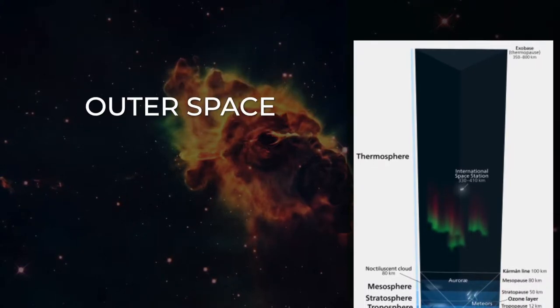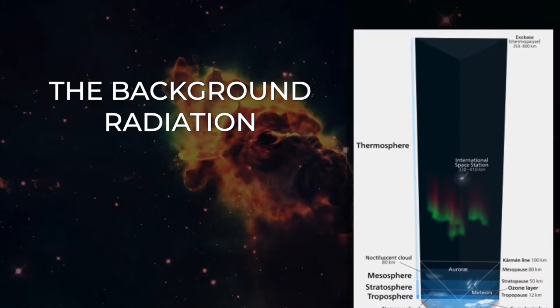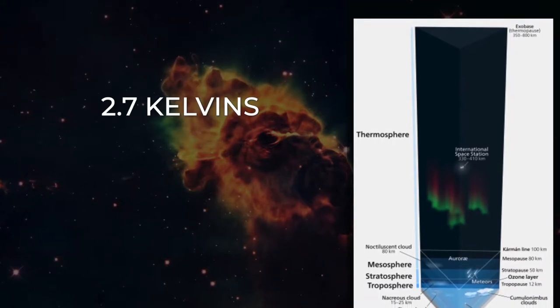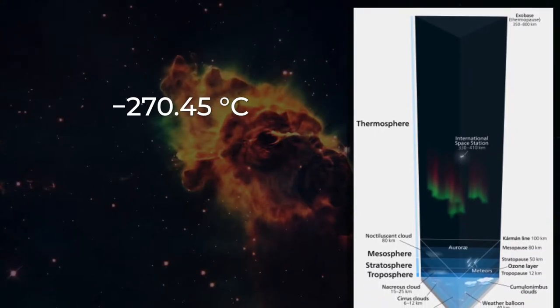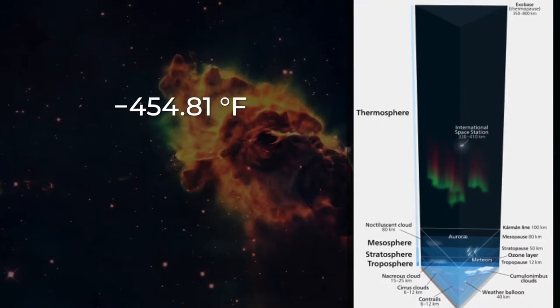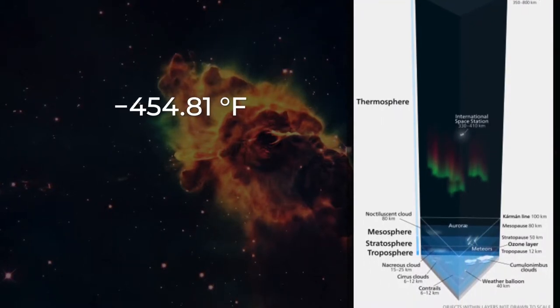The baseline temperature of outer space, as set by the background radiation from the Big Bang, is 2.7 kelvins, minus 270.45 degrees Celsius, minus 454.81 degrees Fahrenheit.